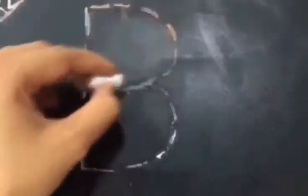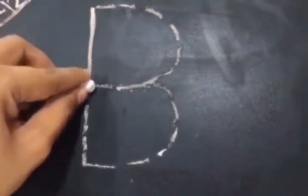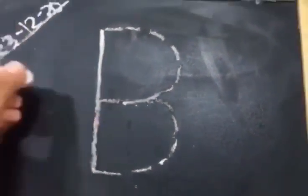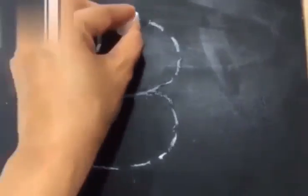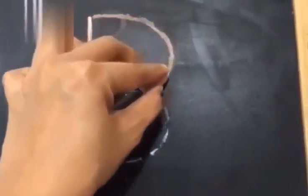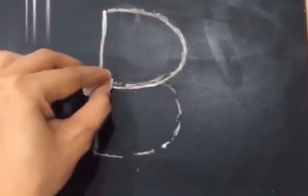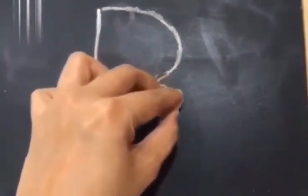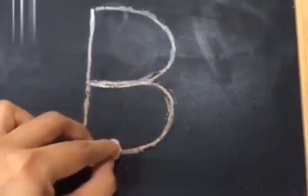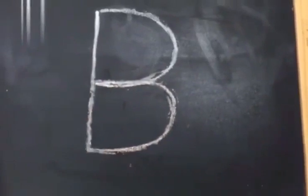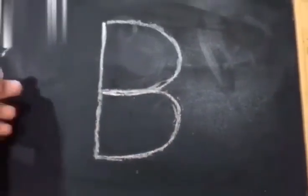To write the alphabet B, you need one standing line and two curves. You make a standing line like this, and then you make two curves like this. Another curve like this. This makes the alphabet B.